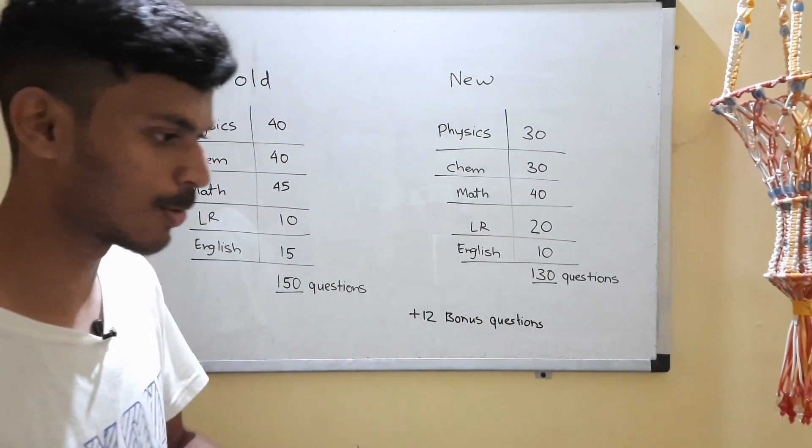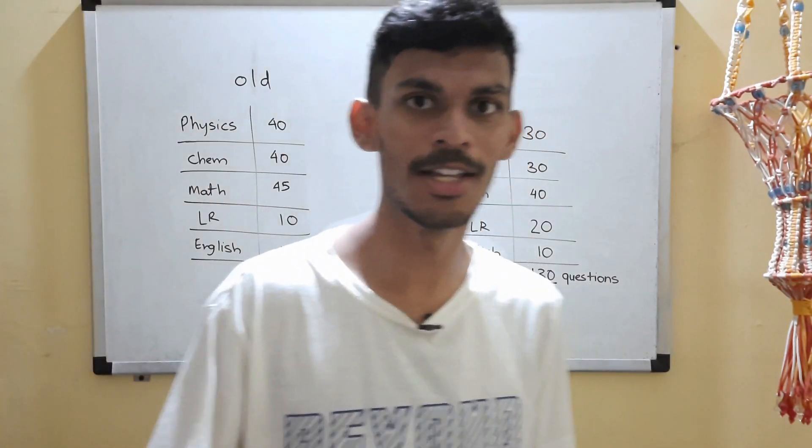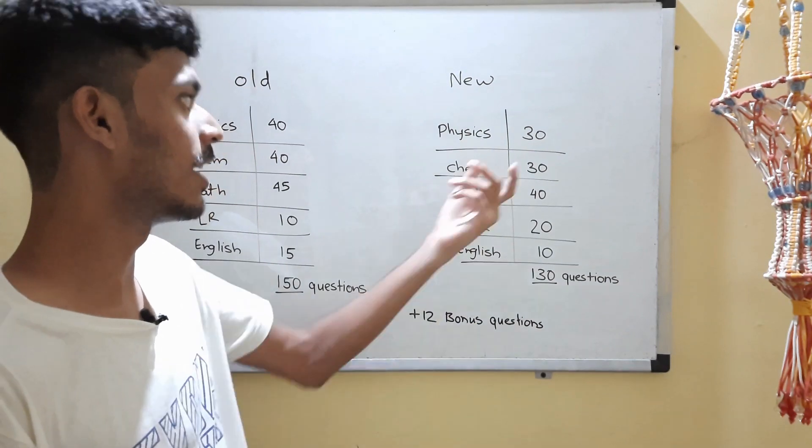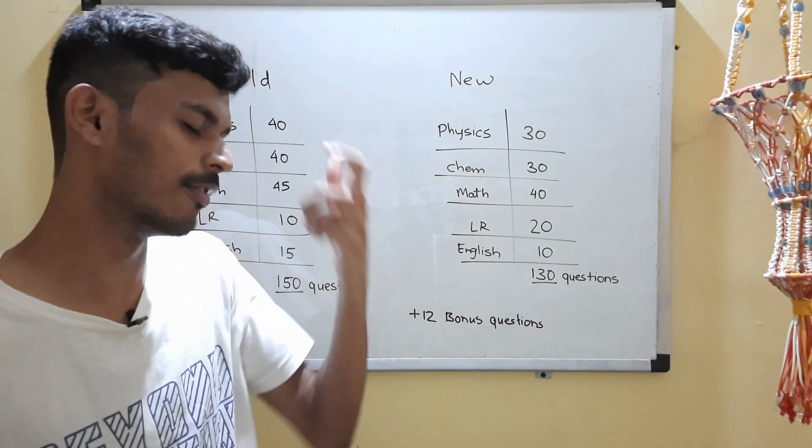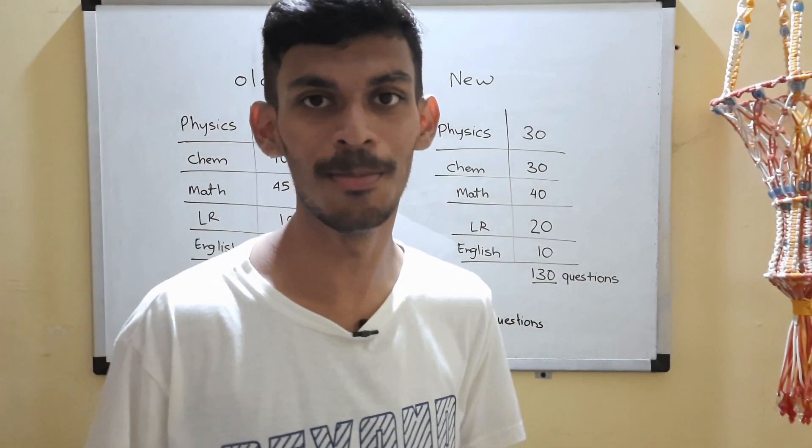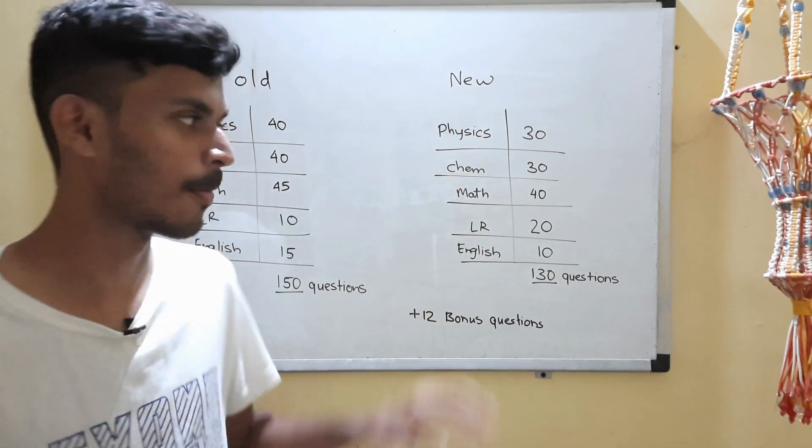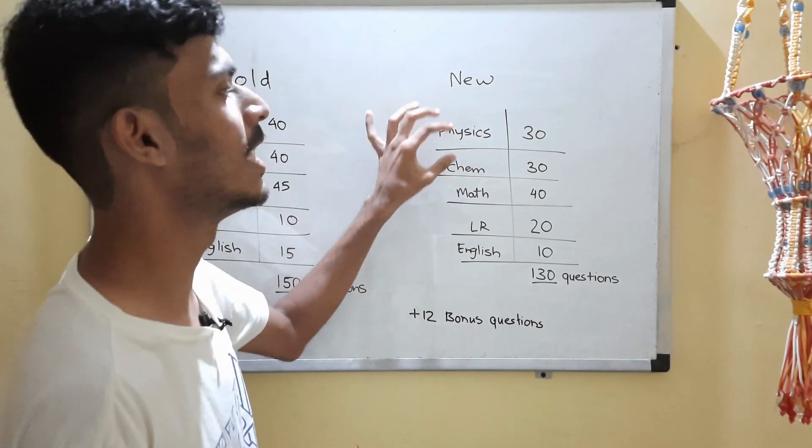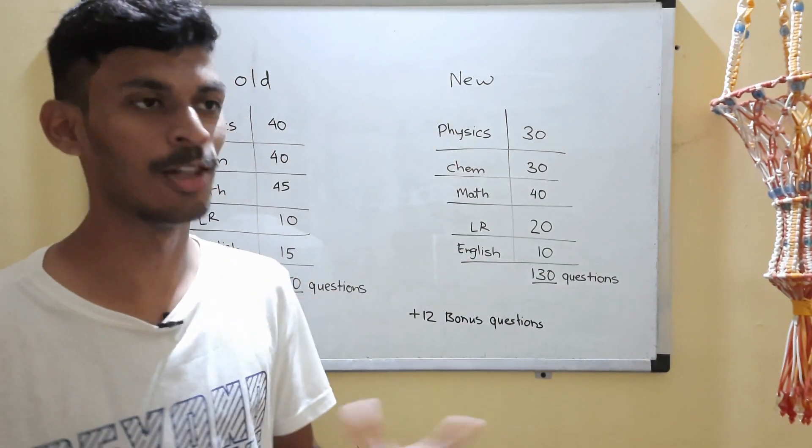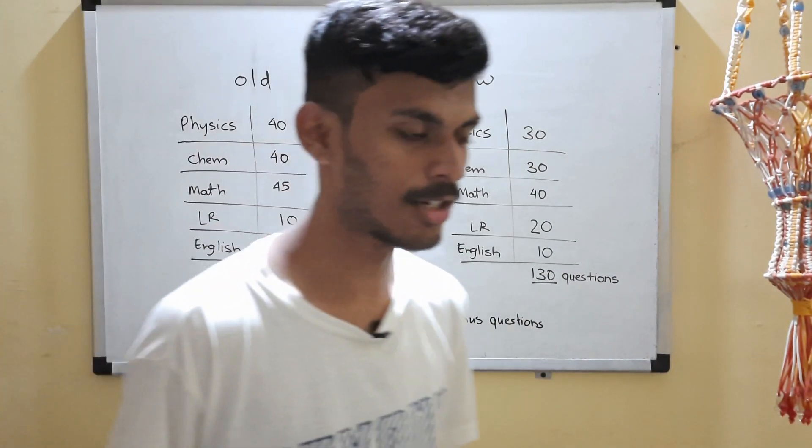So you can see the heavy bias over here—10 questions more in Maths, which means 30 marks more in Maths. In fact, Maths here makes up about 30 percent of the paper, while Physics and Chemistry make up about 23 percent each.